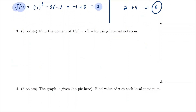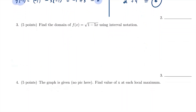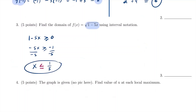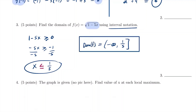Moving on to the next problem: we want to find the domain of a square root function. Since it's a square root, we need the quantity inside to always be non-negative. So I take the inside, 1 minus 5x, set it greater than or equal to 0, and solve. Subtract 1 from both sides: negative 5x ≥ −1. Dividing by negative 5 requires flipping the inequality, giving x ≤ 1/5. In interval notation, the domain is negative infinity to 1/5, including 1/5.